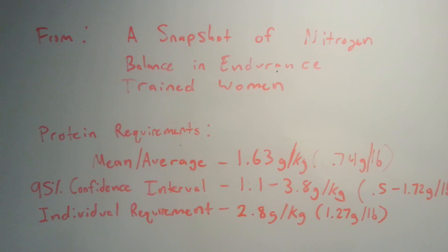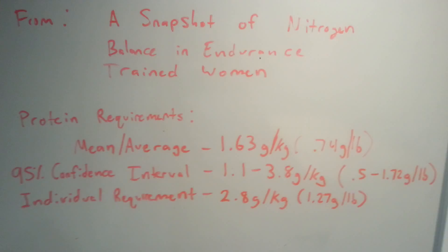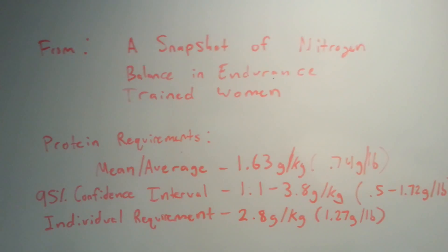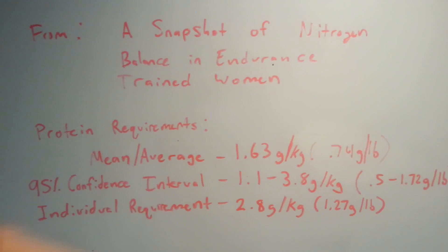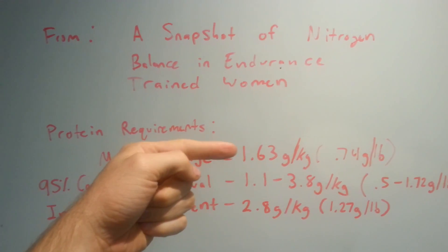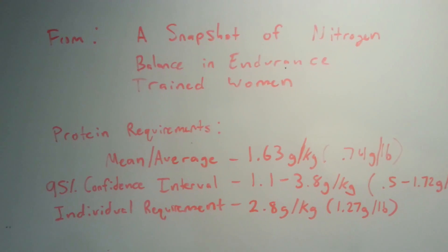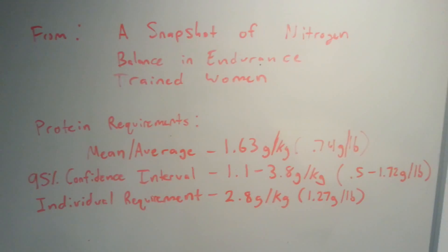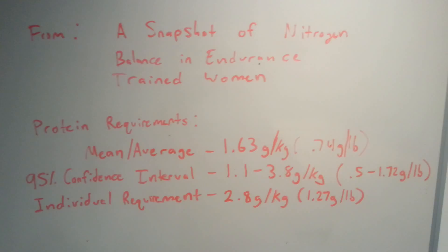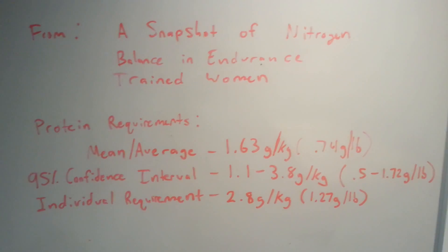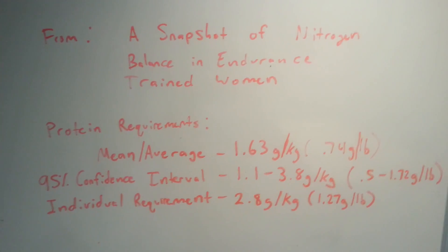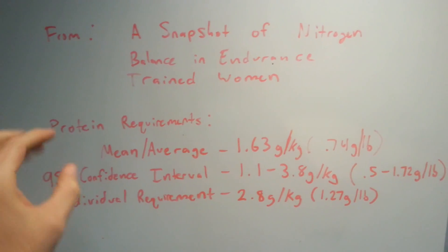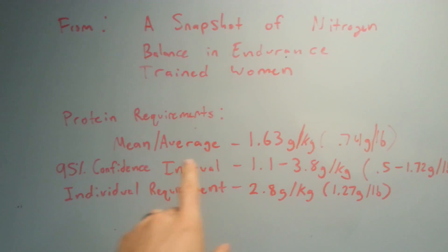If someone online said 'hey, I'm an endurance athlete, I'm taking in 2.8 grams per kilogram,' there would be a whole bunch of people who jump all over and go, 'oh that's way too high, 2.8 grams per kilogram, there's no studies that support that.' And that is where the crux of this whole video comes from. People are using these numbers to tell individuals whether they're wrong or right when they consume a certain amount of macronutrients, do a certain number of sets, have a certain training frequency, have a certain macronutrient intake, etc.